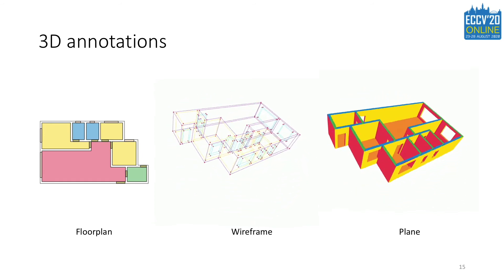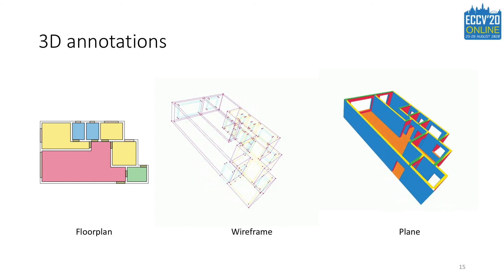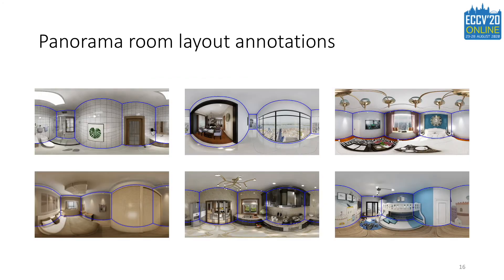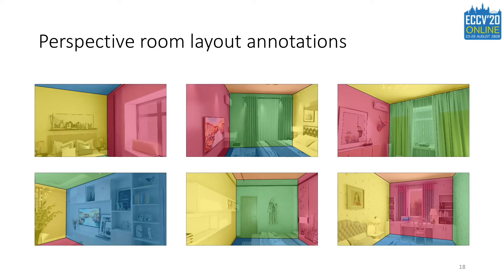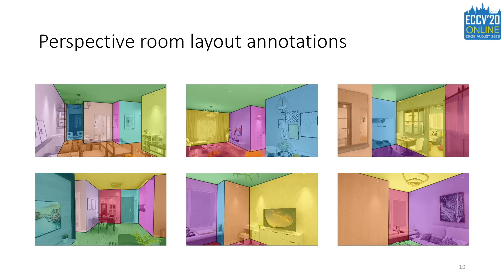Since all ground truth annotations are automatically extracted from the original house design files, they are more accurate than those labeled by humans. Here we show some layout annotations of panoramic images in our dataset, first for cuboid-shaped rooms, then more general layout annotations. We also show layout annotations of perspective images, including cuboid shape rooms and more complicated layouts beyond cuboid shape.